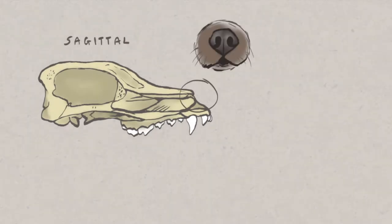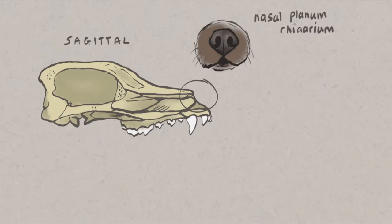The nasal planum or rinarium is a pigmented pad formed from a thick stratified squamous epithelium. The pattern of this epidermal layer is unique for every dog, much like a human fingerprint.